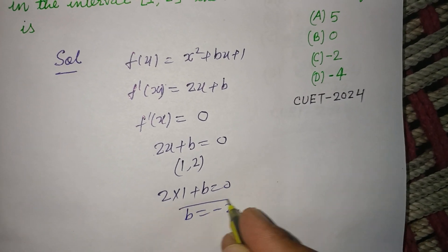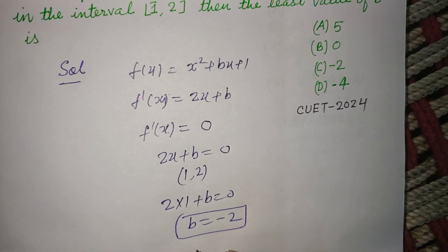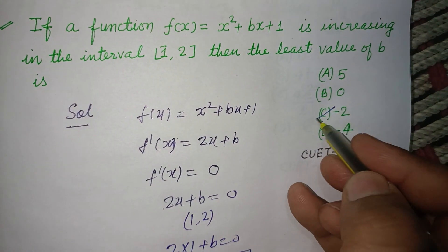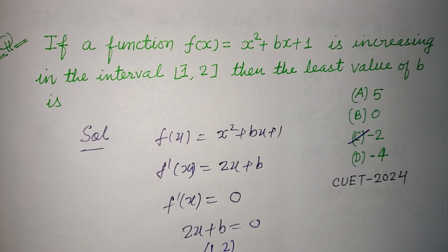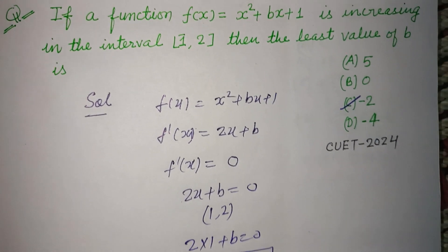Therefore b = -2. So b = -2, the correct answer to this question, which is found in option C. So option C is correct. I hope you got it. Please like the video and subscribe to the channel.